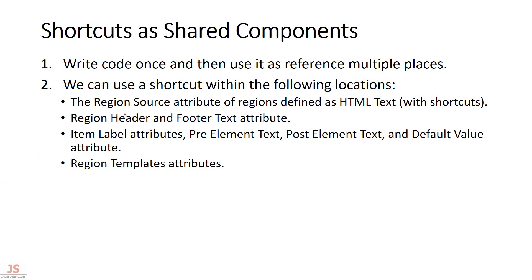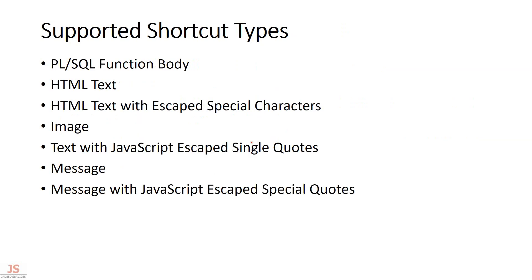We can use shortcuts within the following locations. There are multiple scopes or locations where you can use them: item labels, pre-element, post-element, default values. These are different supported shortcut types, and these also include special characters, etc.